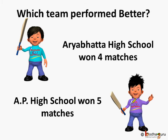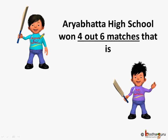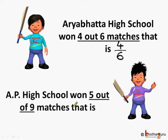Which team performed better? You may say that the AP School performed better because they won 5 matches, and Arubhata High School just won 4 matches. But they played different number of matches. Arubhata High School won 4 out of the 6 matches it played, that is 4 by 6. AP High School won 5 out of the 9 matches it played, that is 5 by 9.